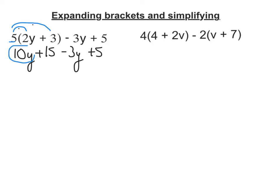I've got my 10y here and my negative 3y here, and I have a plus 15 and a plus 5. So 10y minus 3y is 7y, and 15 add 5 is 20. So my final answer is 7y plus 20.